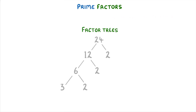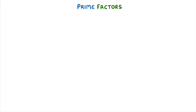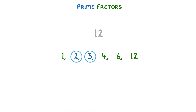All we mean by a prime factor is a factor that's also a prime number. So if we took the number 12, which has the factors 1, 2, 3, 4, 6, and 12, then 2 and 3 would be considered prime factors, because they're both prime numbers and factors of 12.